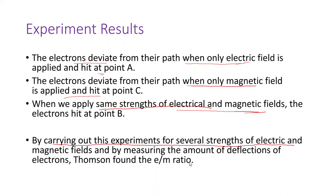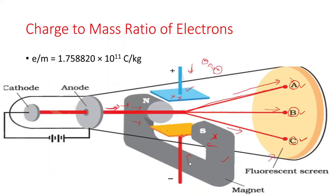By carrying out this experiment for several strengths of electric and magnetic fields and by measuring the amounts of deflection of electrons, Thomson found the e by m ratio. The e by m ratio is 1.758820 × 10¹¹ coulombs per kilogram, where e is the charge on the electron and m is the mass of the electron.